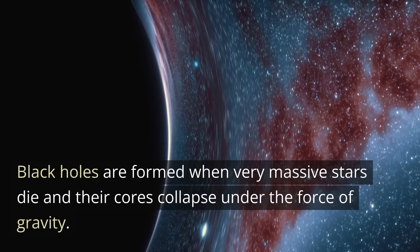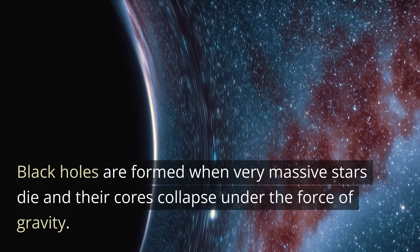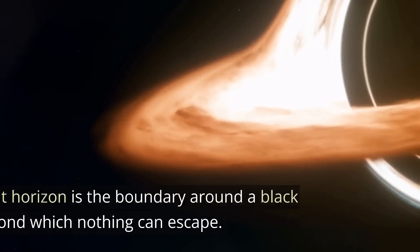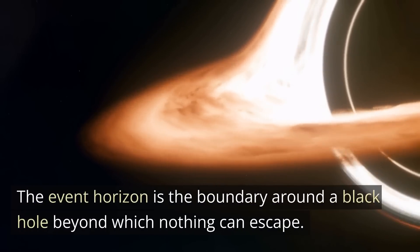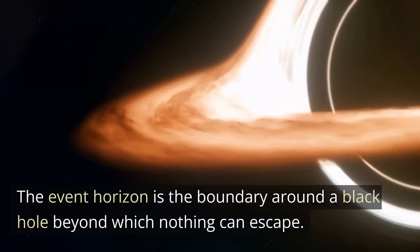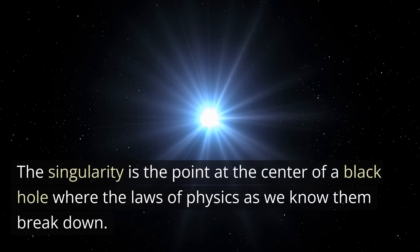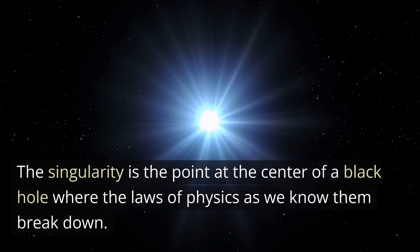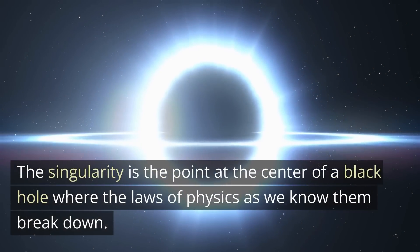Black holes are formed when very massive stars die and their cores collapse under the force of gravity. The event horizon is the boundary around a black hole beyond which nothing can escape. The singularity is the point at the center of a black hole where the laws of physics as we know them break down.